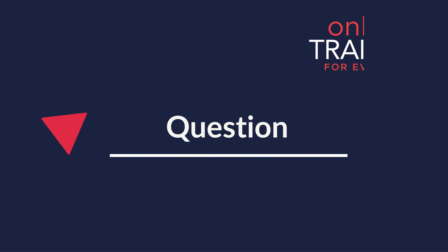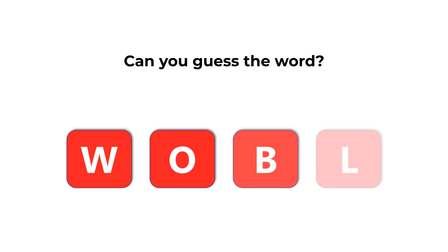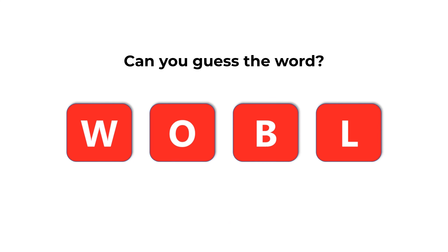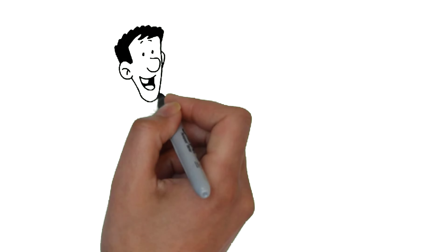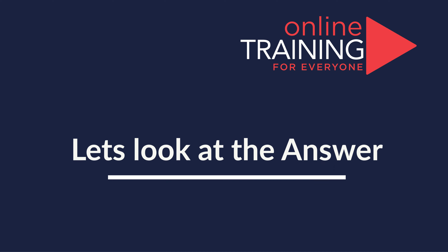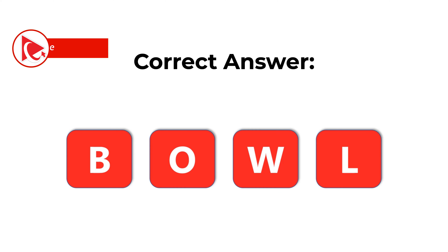Here's a cool question you frequently get on the test. You're presented with four different letters and need to guess the word using all letters. The letters are W, O, B, and L. Can you guess the word? The correct answer is 'bowl', spelled B-O-W-L.